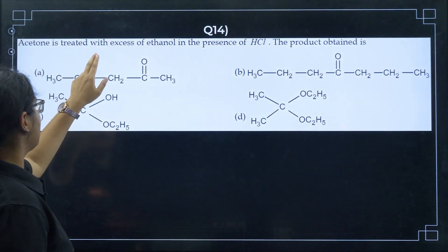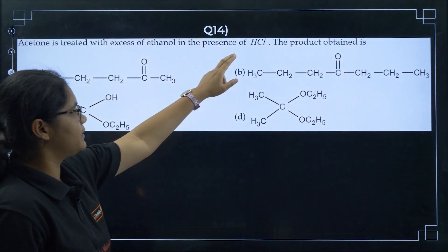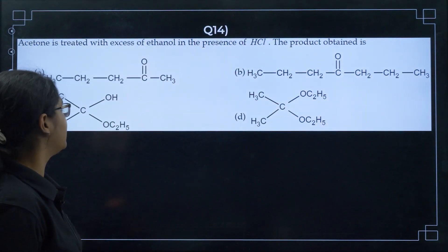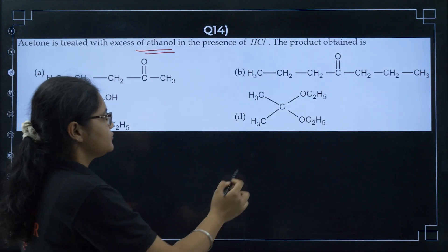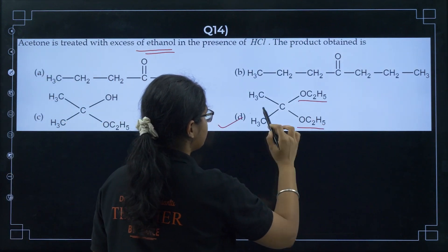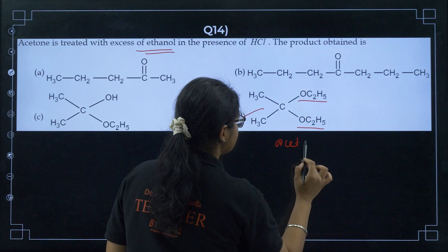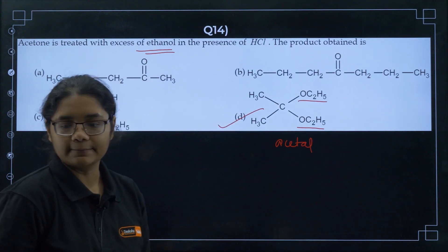Next, NaHSO3 forms an adduct with all the compounds except. You know glucose does not form an adduct compound. Option D here. Next assertion: trichloroacetaldehyde does not undergo aldol condensation. Presence of alpha hydrogen to carbonyl group is a must for aldol condensation.